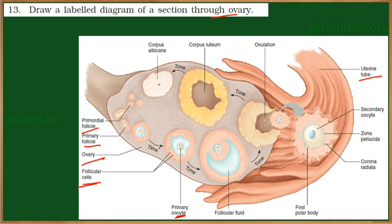As the follicle is developing, the process of oogenesis is also continuing. A cavity is formed, and there are granulosa cells. The secondary oocyte is covered by additional protective layers like zona pellucida, corona radiata, and other protective layers. This structure is called the mature follicle, also referred to as the Graafian follicle.